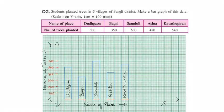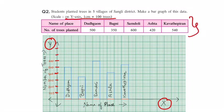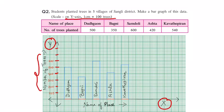Coming back, your answer would look something like this. You have the x-axis and y-axis. Since the scale is one centimeter equal to 100 trees, the markings on the y-axis are 100, 200, 300, 400, 500, 600. We go up to 600 because that is the highest number in the table. The y-axis represents the number of trees, and the x-axis represents the names of places: Bagni, Samdoli, Asta, and Kawitipiran.